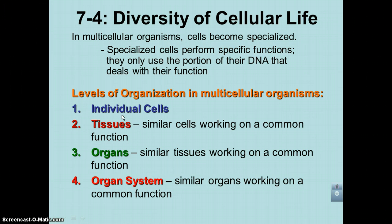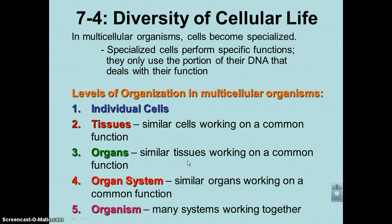For example, you would have an individual cell in the digestive system. The digestive system basically has three different tissue layers. You put all three of these tissues together and you have a single organ. And you put all the organs — such as the large intestine, small intestine, and stomach — together, and that's your organ system. Then you put a bunch of organ systems together and you have an organism.